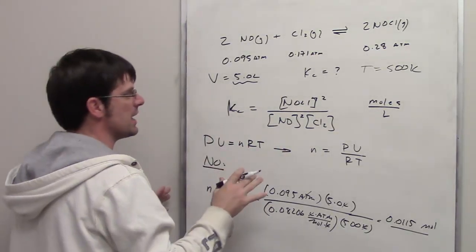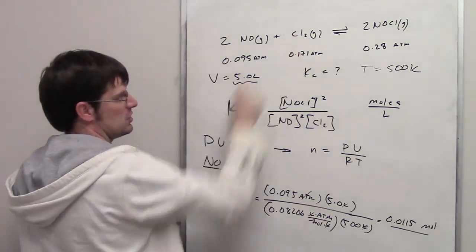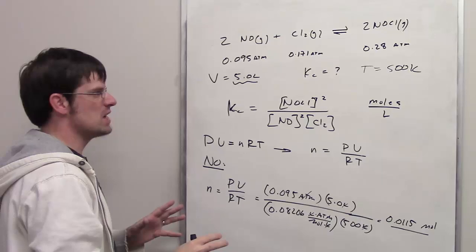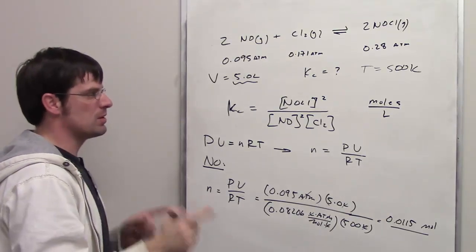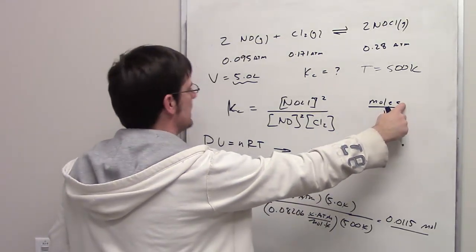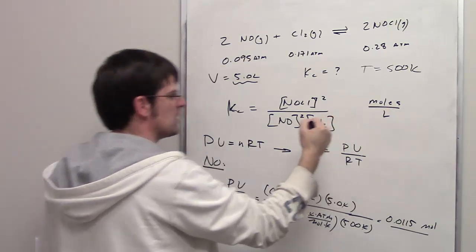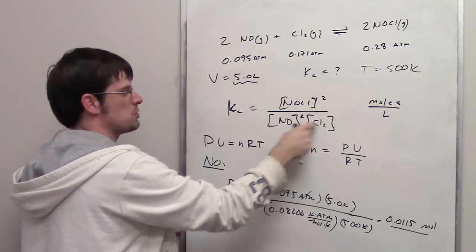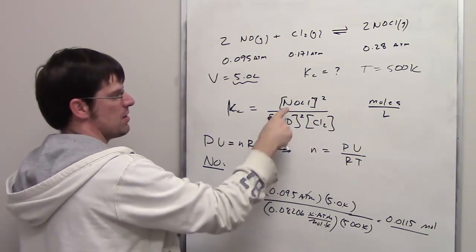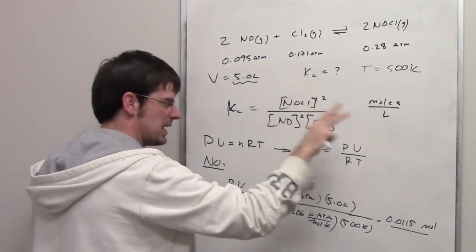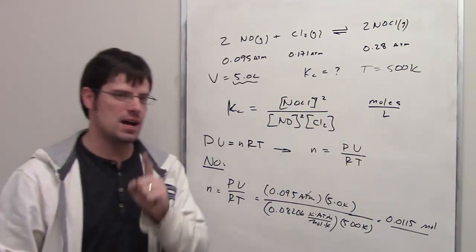Now, I'm going to do the same thing to determine the moles of Cl2 and the moles of NOCl. Once I've done that, I take each number of those moles, and I divide it by the volume of the vessel, 5 liters. And that gives me the concentration of each one of these respective substances. I then throw each of those concentrations in here, and then plug it into my calculator, and voila, I should have Kc.